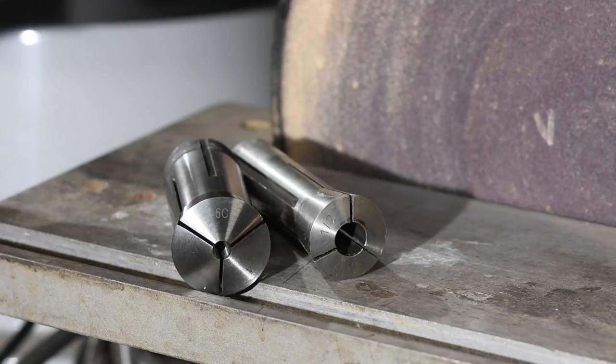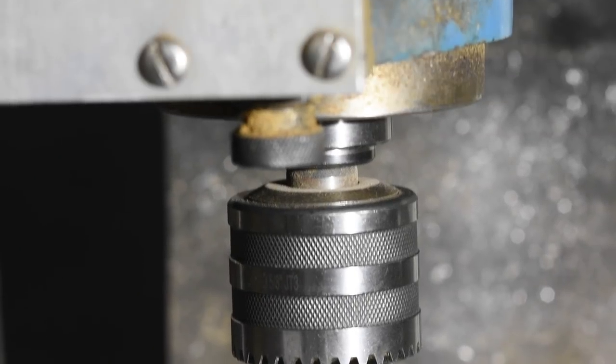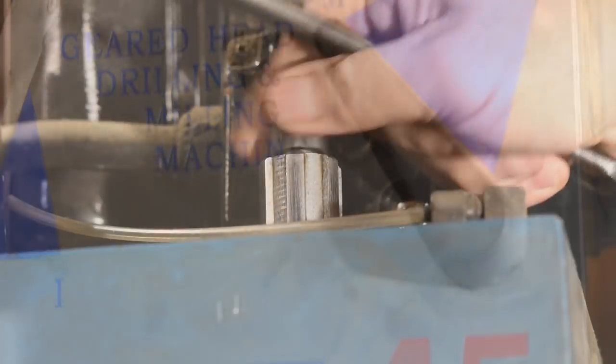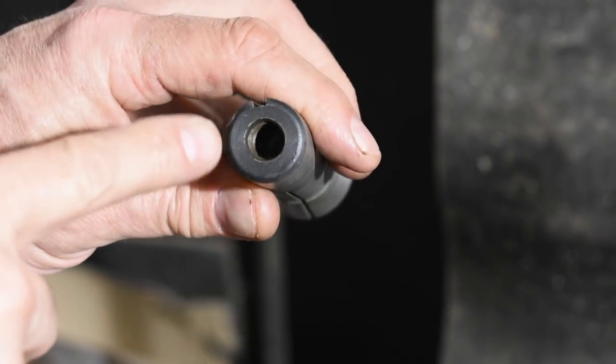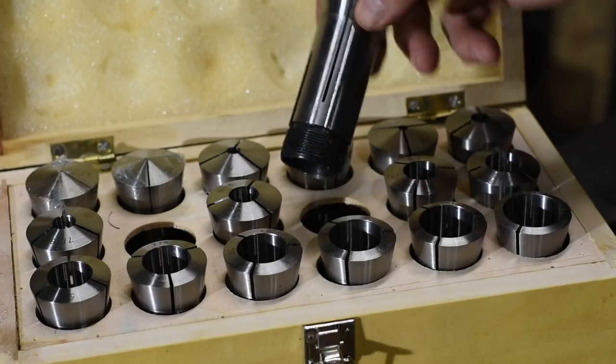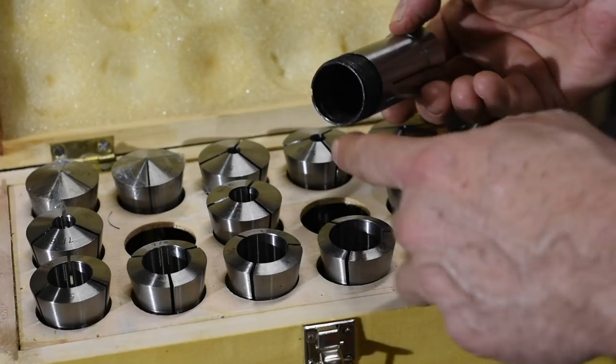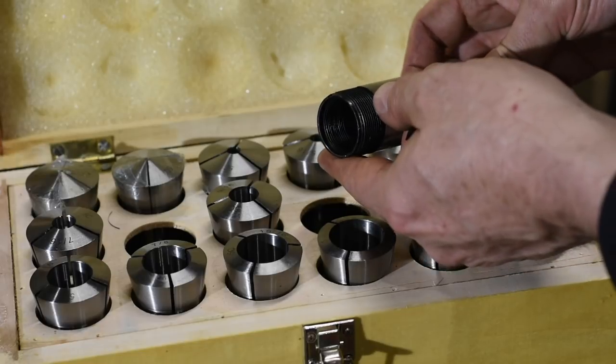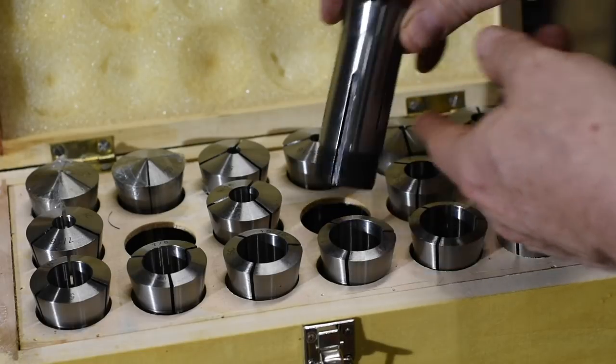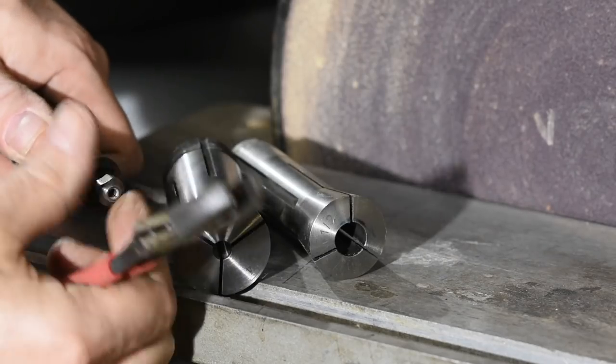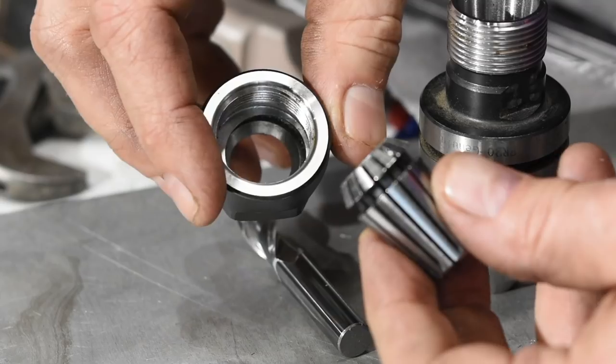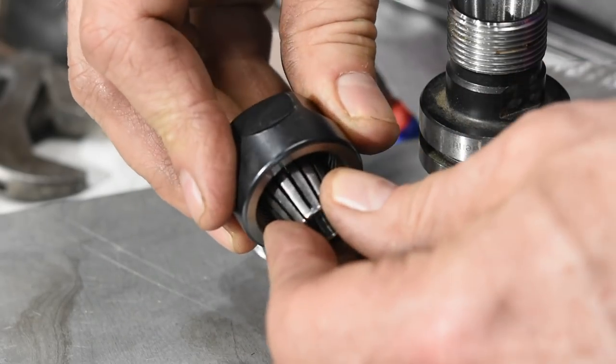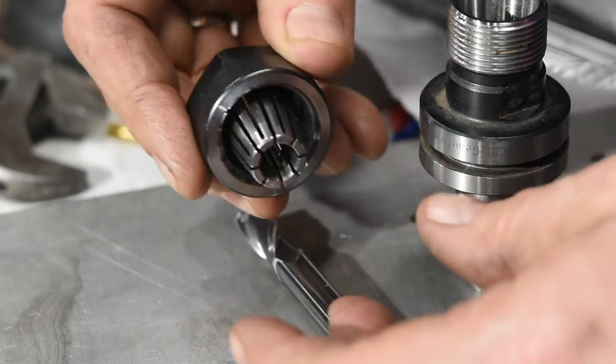That's how these R8 and 5Cs work. The R8 uses a draw bar that threads into the inside of the collet. Whereas the 5C generally has external threads that pull from the outside, though they can also be pulled from the inside in some cases. Others, like this humble Dremel and this ER collet, have a threaded cap which presses the collet down from the front.